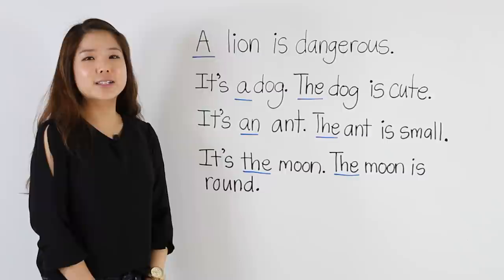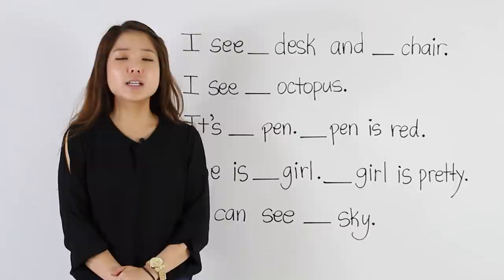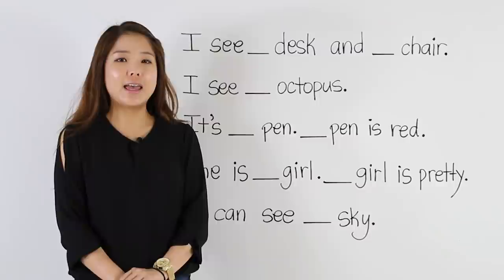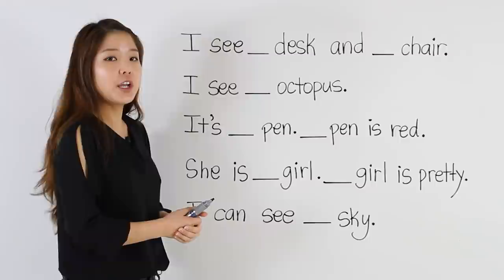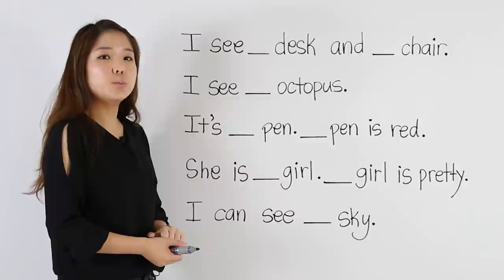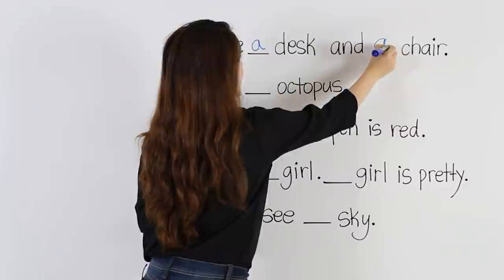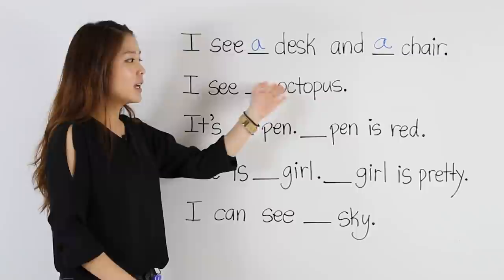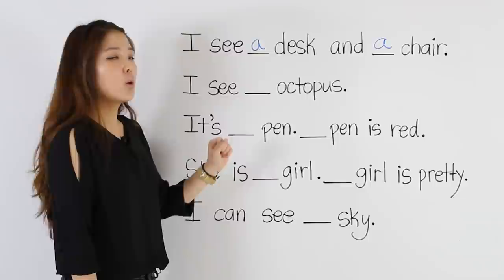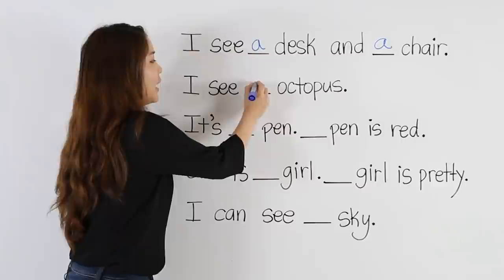Let's look at some more examples. This time, think about whether we should put a, an, or the. I see a desk and a chair — we don't know which desk and chair, and it's the first time I'm talking about them, so we put a. The next one: I see an octopus. It starts with the vowel o and it's the first time I'm talking about it, so we put an octopus.